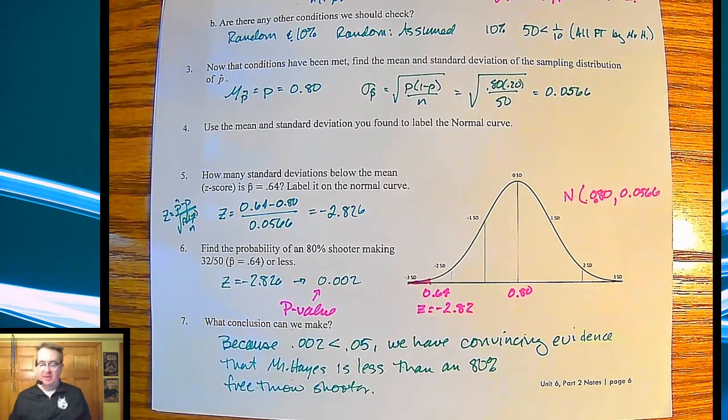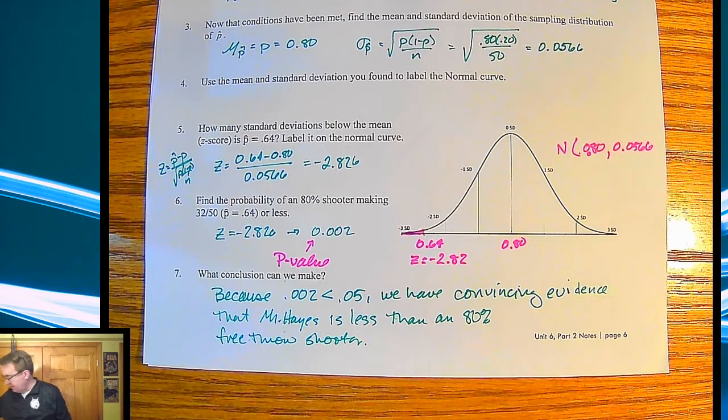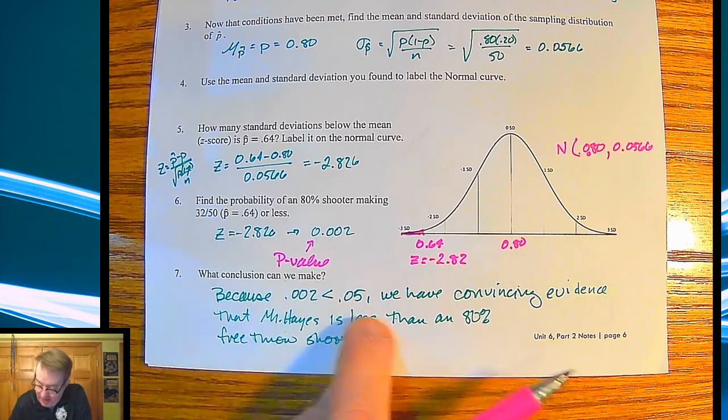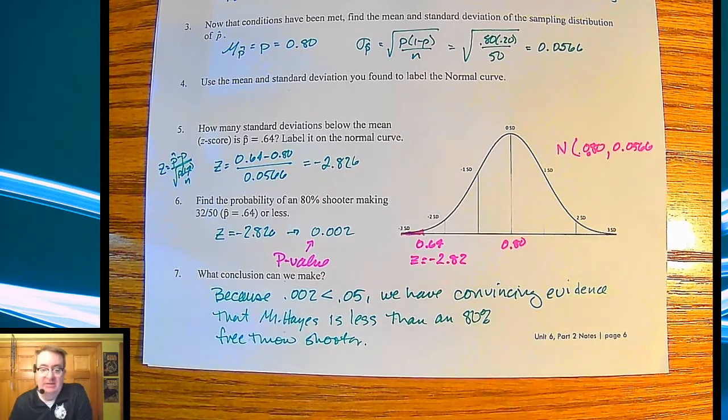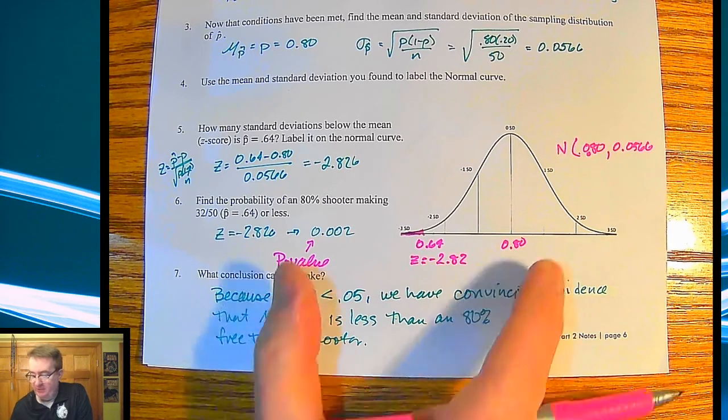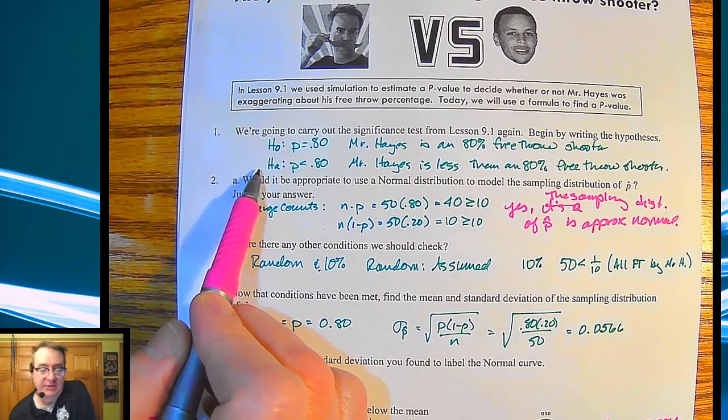So what conclusion can we make on this? Well, we are going to make the conclusion that I don't know what I'm talking about, basically. Because 0.002 is less than 5%, 0.05, we have convincing evidence that Mr. Hayes is less than an 80% free throw shooter. So effectively, we are rejecting the null hypothesis in favor of our alternative hypothesis.